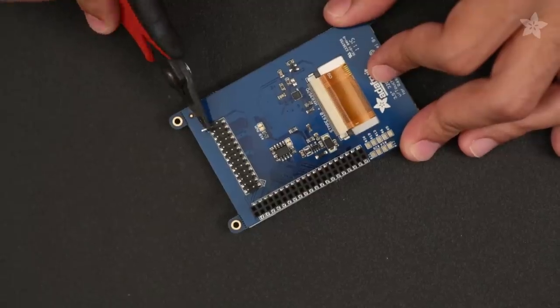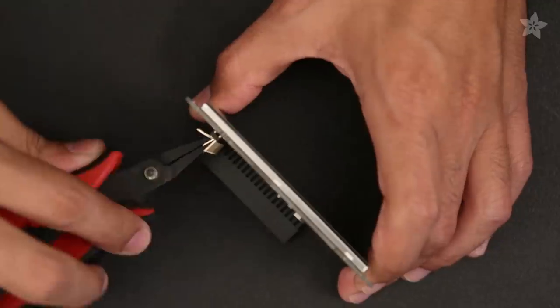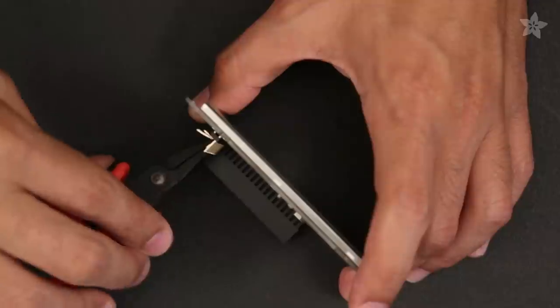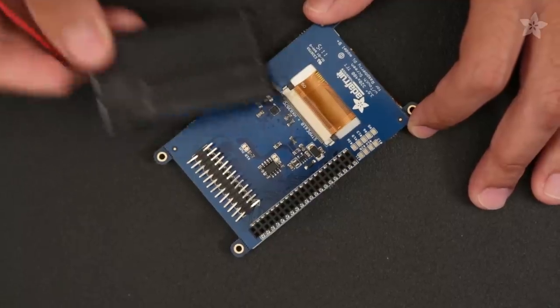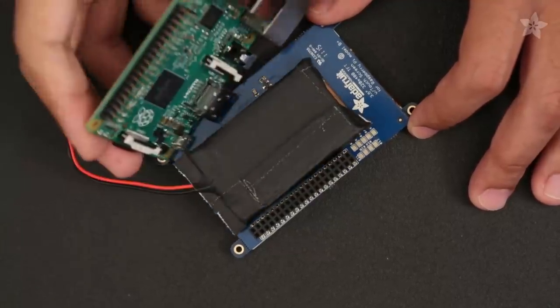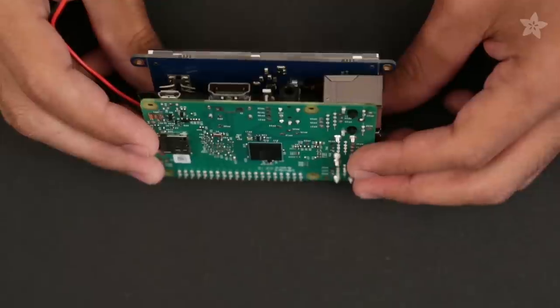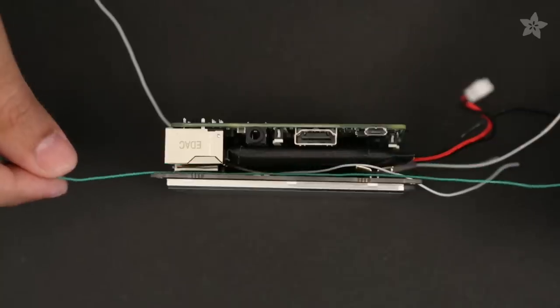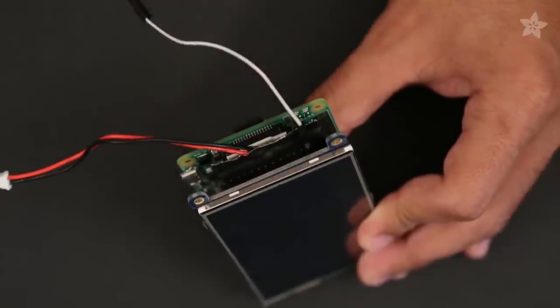To fit the battery in between the circuit you can carefully bend the pins on the header of the Pi TFT and place a 2000mAh LiPo battery in between the display and the Raspberry Pi. You can also route the wires in between the circuit and use jumper cables to easily connect to the power and ground pins on the Pi TFT.